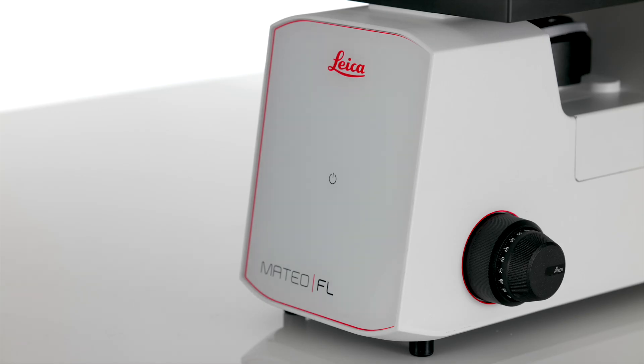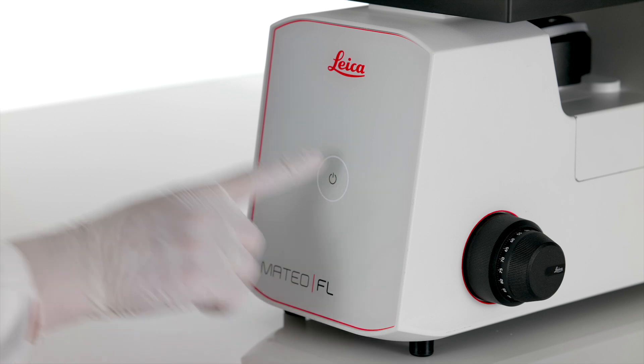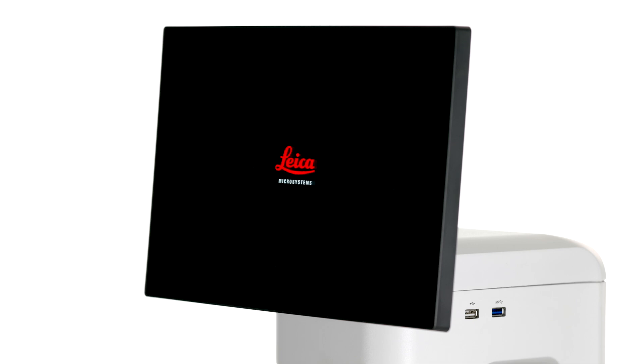After this first setup, all you have to do to turn Mateo FL on in the future is press down the power button located at the front of the instrument for five seconds. When Mateo FL powers up, you will see the main screen display appear.